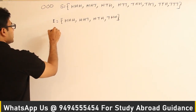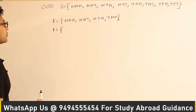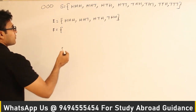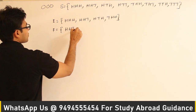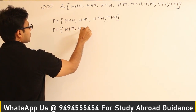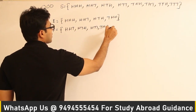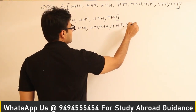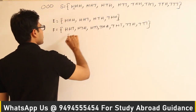Now let us say F is an event in which at least one of the coins turned out to be tail. F is going to contain all outcomes except HHH — so all other 7 outcomes are possible in F.